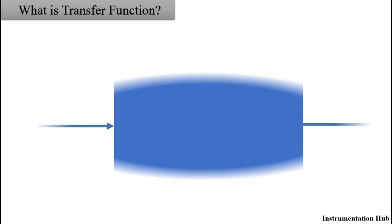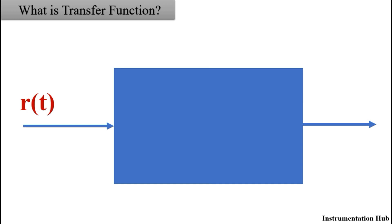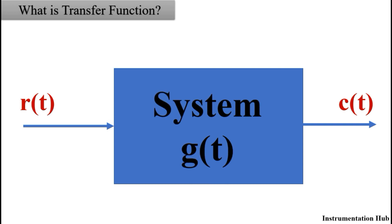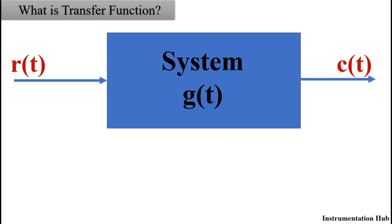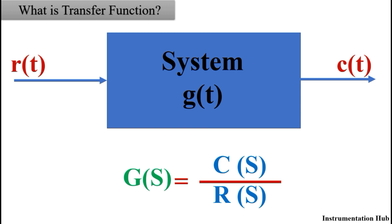Let's understand with an example. Consider a control system with input r(t) and output c(t), and the impulse response of the system is g(t). Now we have to calculate the ratio of the output to the input. For calculating transfer function, we take the Laplace transform of the input and output. So our final equation becomes: G(s) = C(s) / R(s). So the transfer function of this system is G(s) = C(s) / R(s).